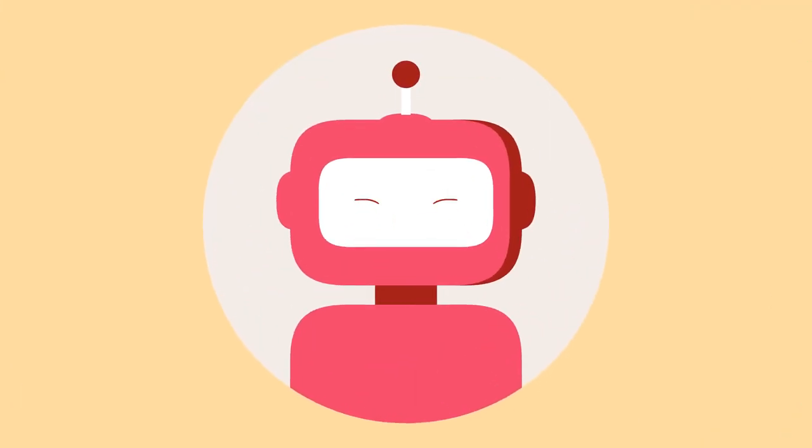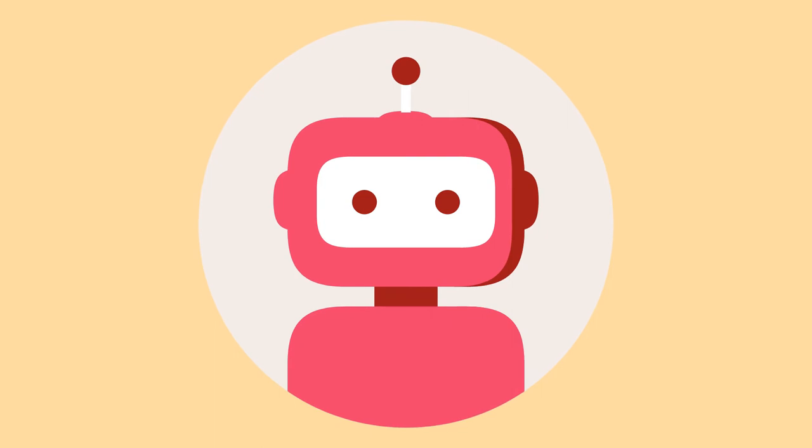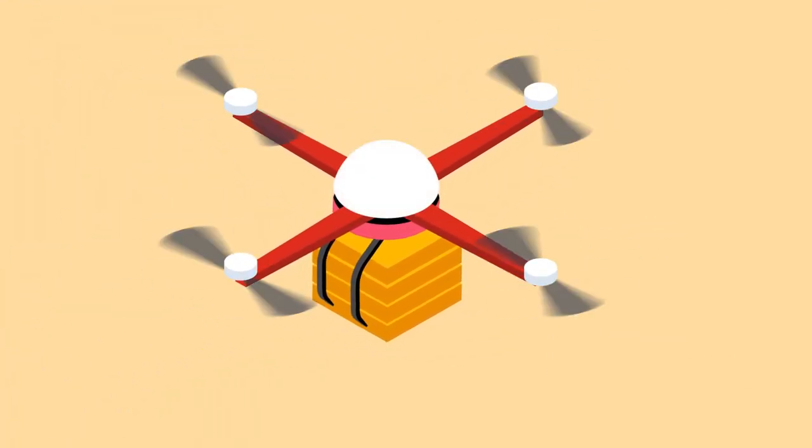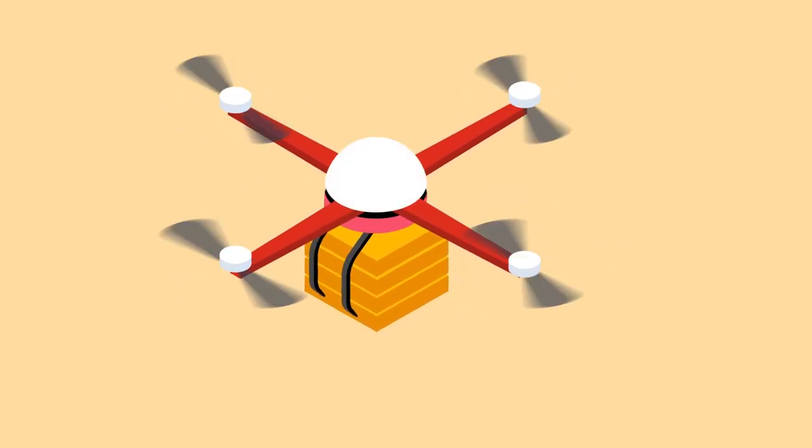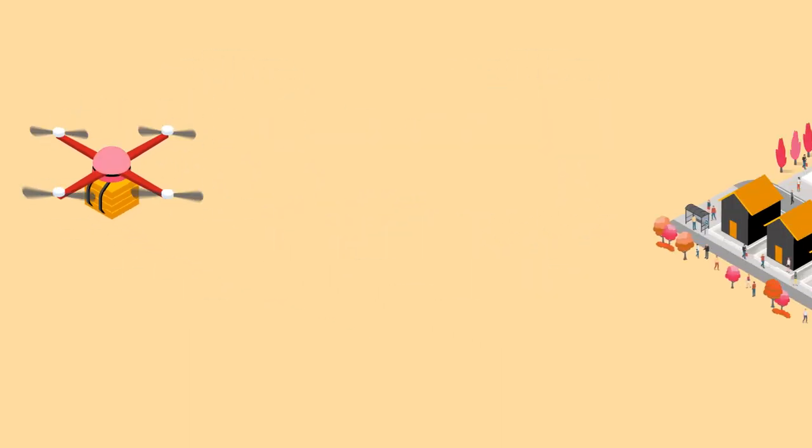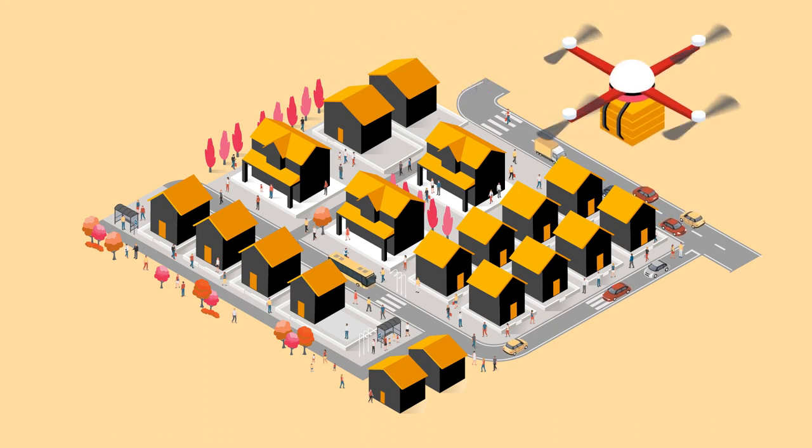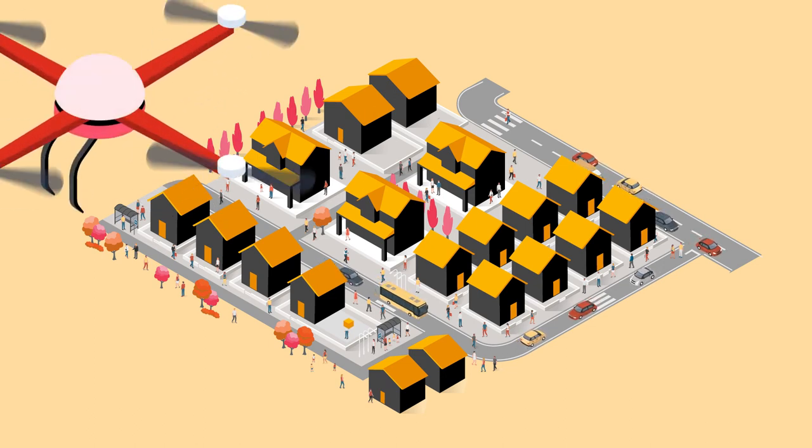Could you ever imagine that robots would be a solution? In the very near future, robots like self-flying helicopters, also known as drones, could be delivering your favorite food. Think about it. Because drones fly, they don't need to worry about things like traffic or running into other people. It's so much faster, not to mention a cool way to have your pizza delivered.